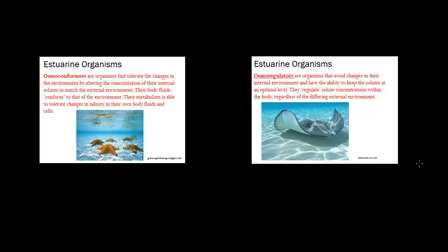There are two types: osmoconformers and osmoregulators. Osmoconformers are organisms that tolerate changes in the environment by altering the concentration of their internal solutes to match the external environment. Their body fluids conform to those of the environment — 'conform' is the key word here. Their metabolism is able to tolerate the changes in salinity in their own body fluids and cells. They tolerate.